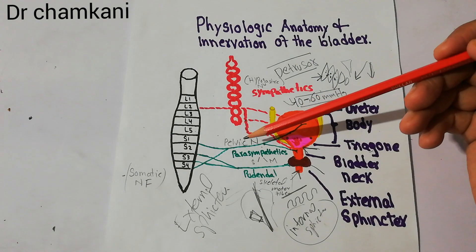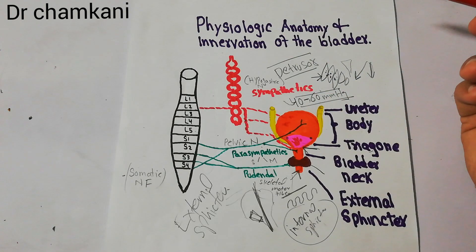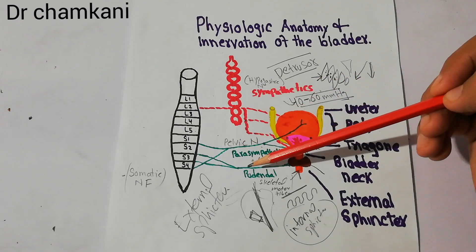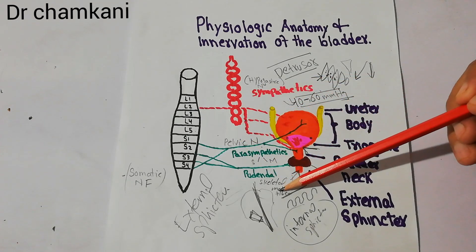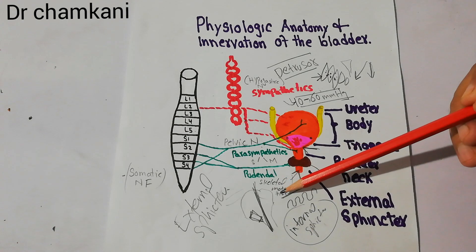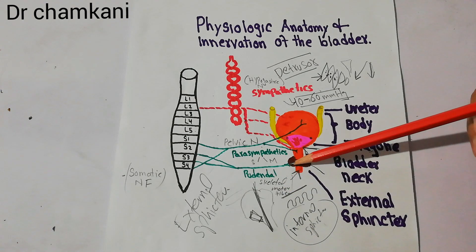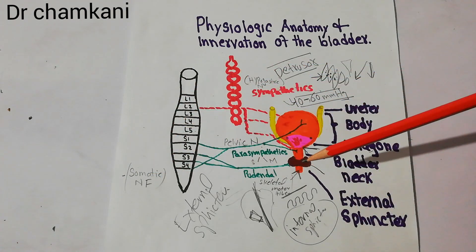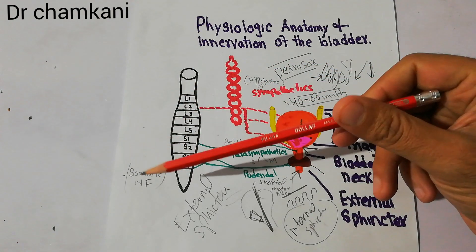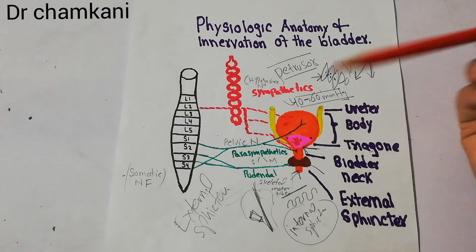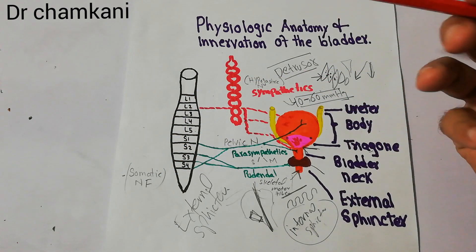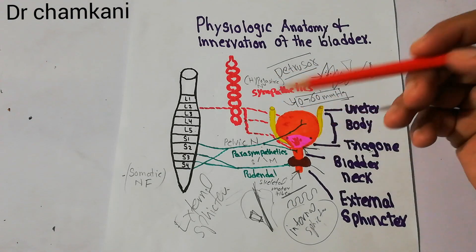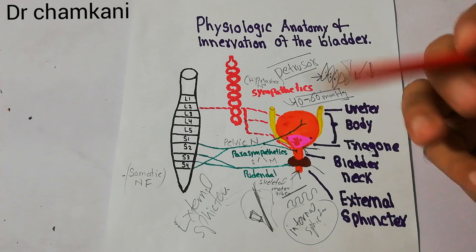Apart from the pelvic nerve, there are two more innervations of the urinary bladder. One is the pudendal nerve. The pudendal nerve takes skeletal motor fibers towards the external sphincter of the urinary bladder. These skeletal motor fibers are a kind of somatic nerve and they supply the external sphincter. Due to these somatic nerve fibers, human beings have voluntary control over the external sphincter.